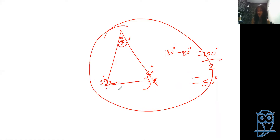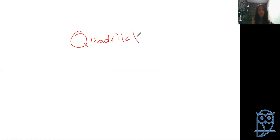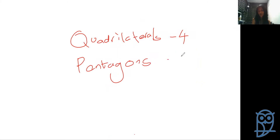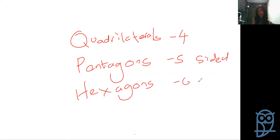Polygons are named according to their number of sides. Quadrilaterals are four-sided shapes, pentagons are five-sided, hexagons are six-sided, and so on - heptagons, octagons. Polygons are named according to how many sides they actually have.